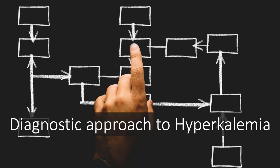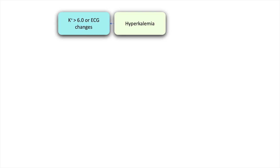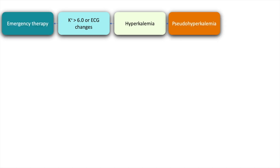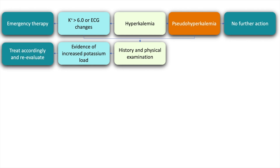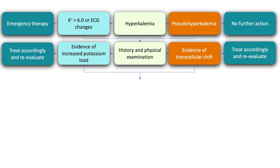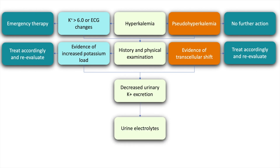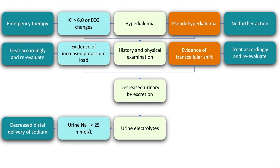The diagnostic approach to hyperkalemia involves assessing if the potassium is more than 6 or the patient is having ECG changes — in such cases emergency therapy is required. If pseudo-hyperkalemia is suspected, no treatment is required. A thorough history and physical examination would go a long way in identifying the cause. If there is evidence of increased potassium load or transcellular shift, this can be treated accordingly. If decreased urinary potassium excretion is suspected, urine electrolytes may be the way to go. If urine sodium is less than 25, this indicates decreased distal delivery of sodium.